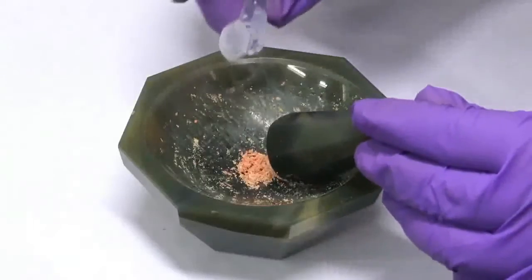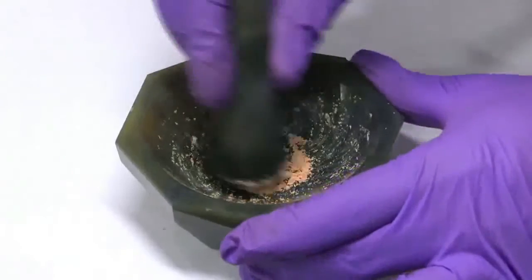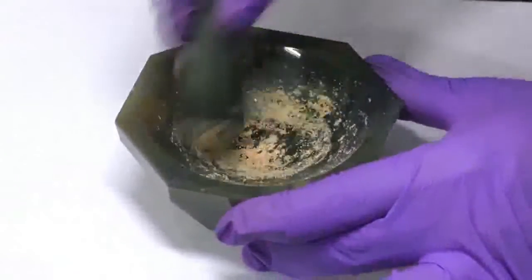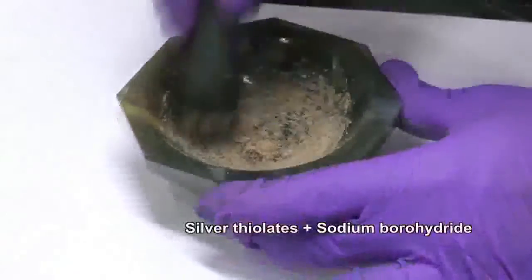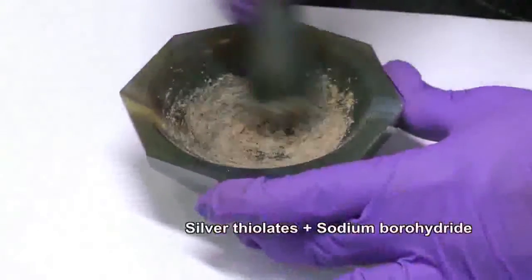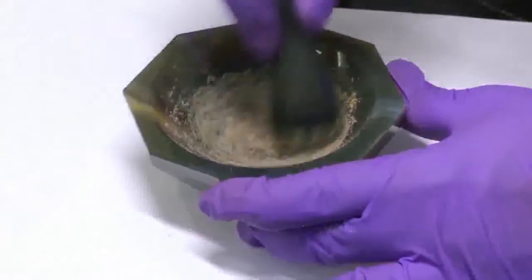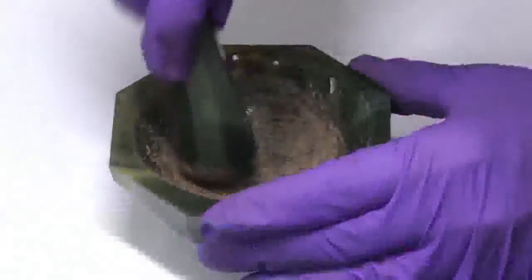Sodium borohydride was added next. Continued grinding results in a change in color from orange to dark brown. Silver thiolates got transformed to nanoclusters. This happened in the solid state.